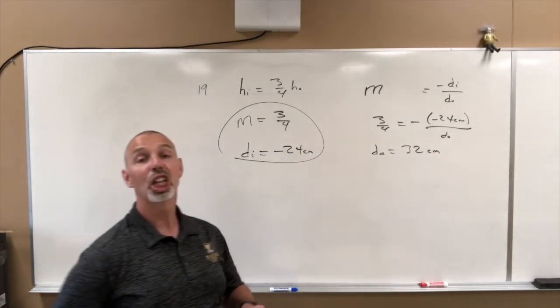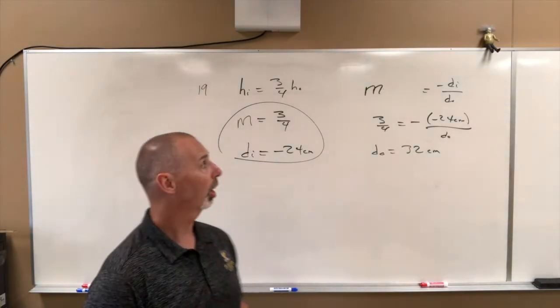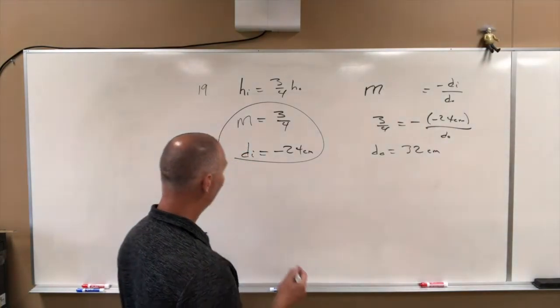The object will be in front of the mirror. We've got a positive answer. Remember, positives are in front, negatives are behind, so our image was behind the mirror. Now that we have that, now we can use 1 over F equals 1 over DI plus 1 over DO.